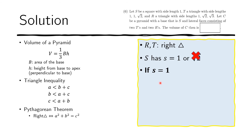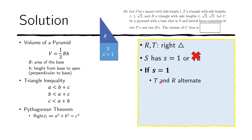Now let's consider the other possibility that's left, which is S equals 1. In that case we again have two possibilities. One is that the R's and T's alternate: R, T, R, T. In that case, we have square root of 2 here and square root of 3 here on R, and the triangle here could only be like this because the side is square root of 2. Since square root of 2 here doesn't match with square root of 3 here, they don't close the pyramid. So we have a problem with this configuration.